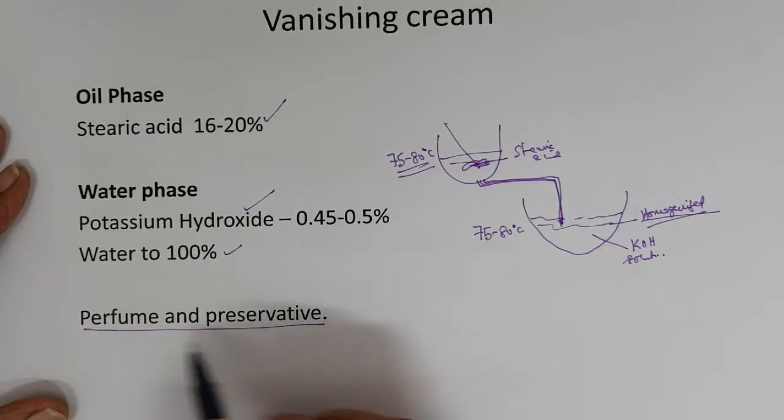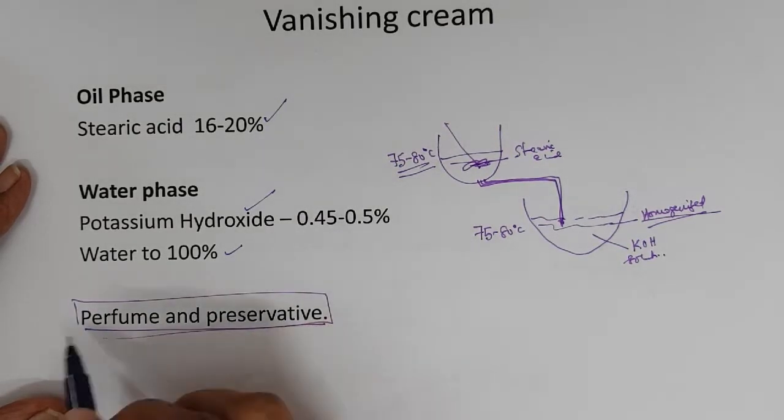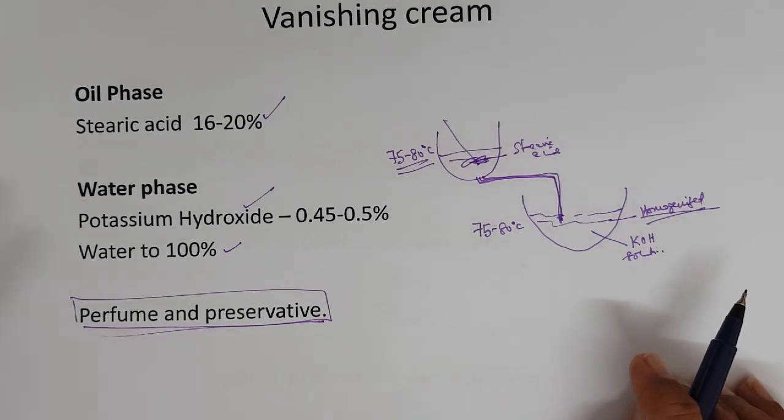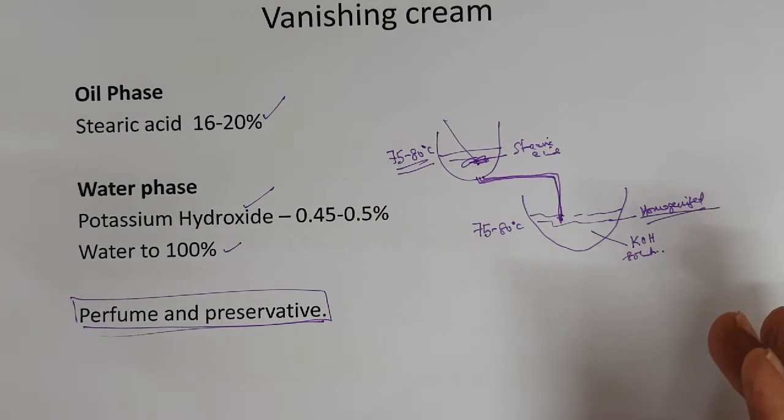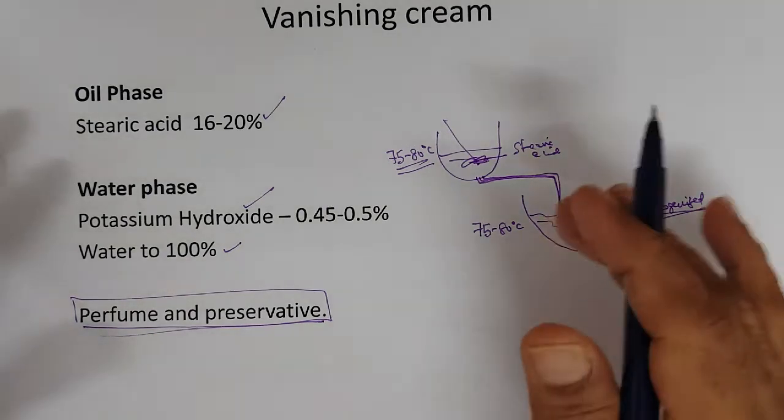Then cooled. At 45 degrees you can add perfume and preservatives. This is how the cream is made.